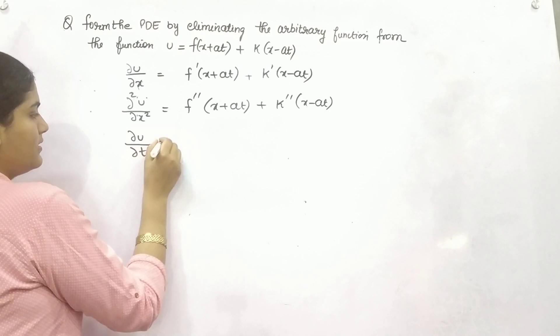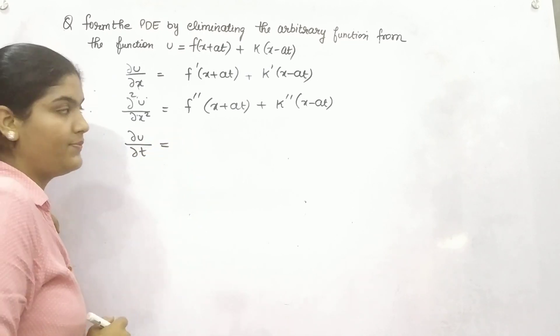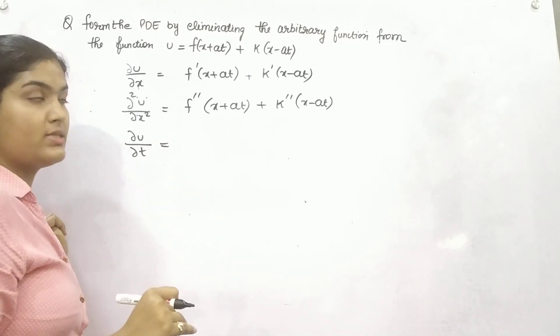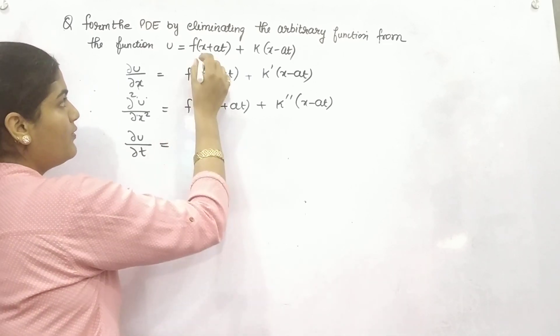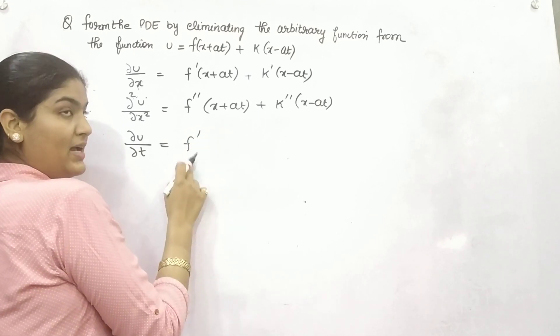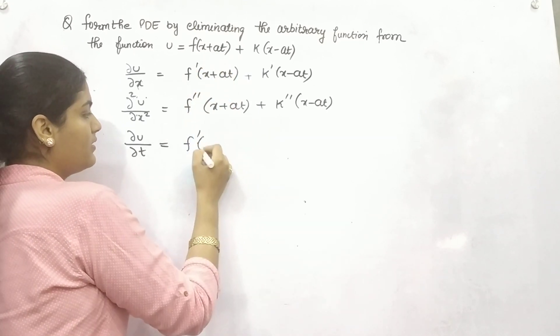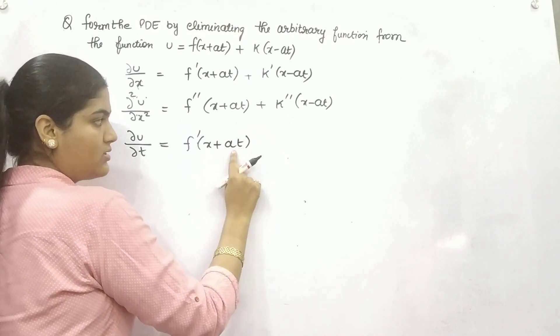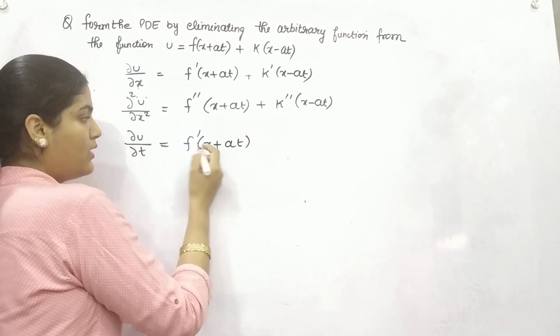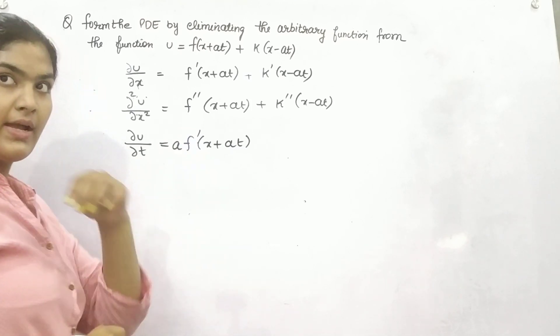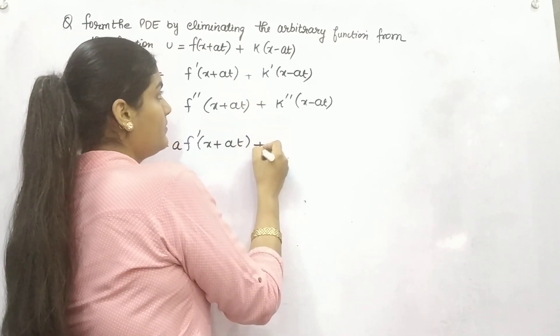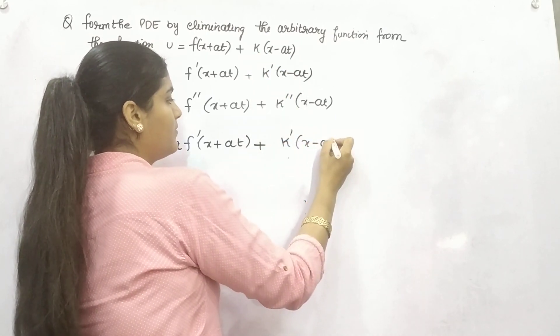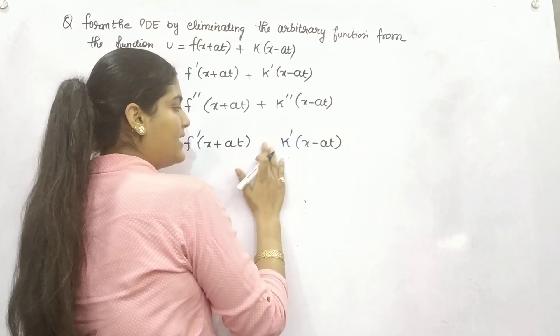Then after, now take with respect to t. If you differentiate this with respect to t, partially, that means keeping x constant. So what will you get? f prime partial differentiation of this function with respect to t. When you take this, the coefficient of t is a, so it will come out. Then after, partial differentiation of this, now the coefficient of t is minus a.